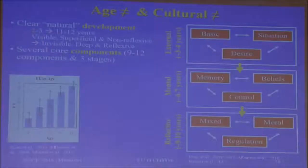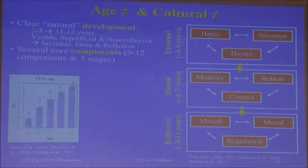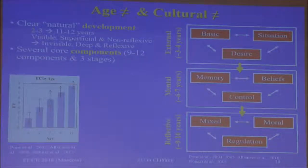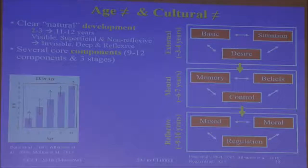Here's an illustration showing age and the level of emotion understanding. There is a very clear development with age in the number of components the child is able to understand. It seems that there are three qualitative stages in the development of emotion understanding — not only a quantitative development in the number of components, but also a qualitative change going from simple, superficial aspects of emotion to more elaborate and complex components.